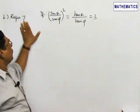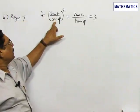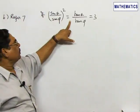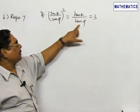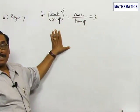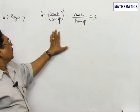We will go to problem number seven. If (sin θ / sin φ)² = tan θ / tan φ = 3, you are asked to find the value of tan φ.